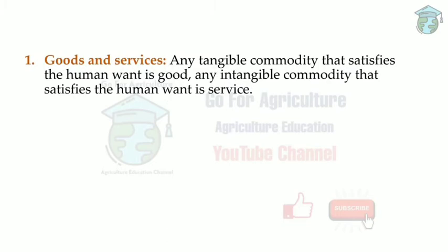Next are some important definitions. Goods are any tangible commodity that satisfies human wants — tangible means things we can touch and feel, like a phone, food, clothes, laptop, or car. Services are intangible commodities that satisfy human wants, like customer care or cleaning services — they satisfy your needs but you can't touch or feel them.